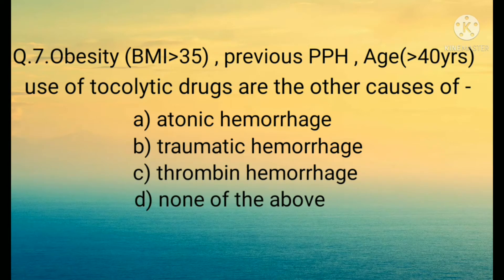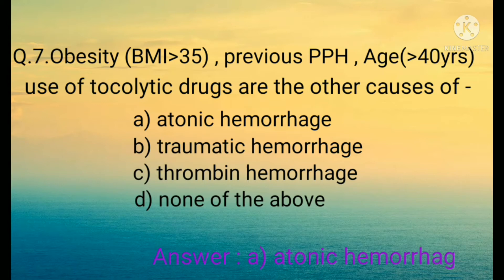Question number seven: Obesity (BMI more than 35), previous PPH, age more than 40 years, and use of tocolytic drugs are the other causes of: A) Atonic hemorrhage, B) Traumatic hemorrhage, C) Thrombin hemorrhage, D) None of the above. The correct option is A) Atonic hemorrhage.